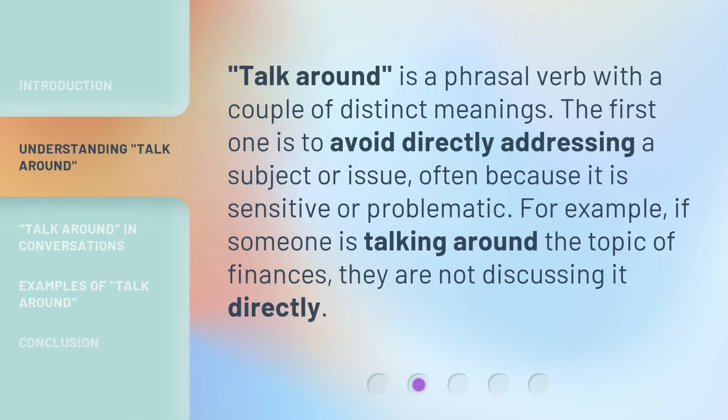Talk Around is a phrasal verb with a couple of distinct meanings. The first one is to avoid directly addressing a subject or issue, often because it is sensitive or problematic. For example, if someone is talking around the topic of finances, they are not discussing it directly.